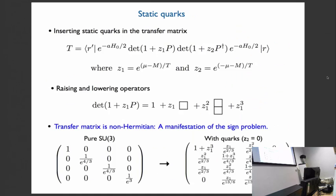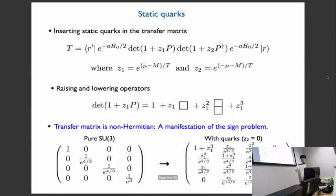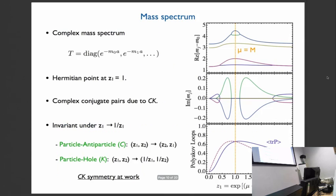Now we diagonalize this transfer matrix. We can write it as the lowest mass eigenvalues here and next one m1 and so on. This one is the real part of the mass gap and this one is the imaginary part, plotted as a function of the fugacity of the quark. If z1 is zero, then we see that all the mass spectrums are real. There's no imaginary part. This is a Hermitian point. And there's another special point, the Hermitian point, where z1 is equal to one from this orange line. Because when z1 is equal to one, the Polyakov loops and conjugate loops are weighted equally. So the determinant is real.